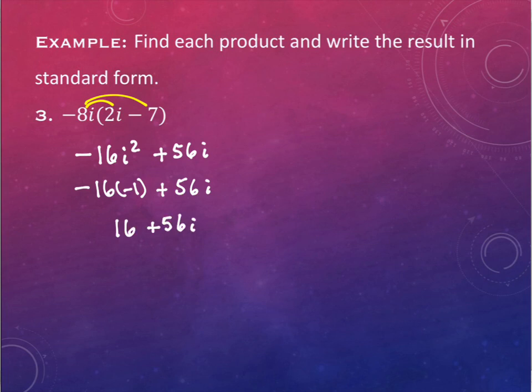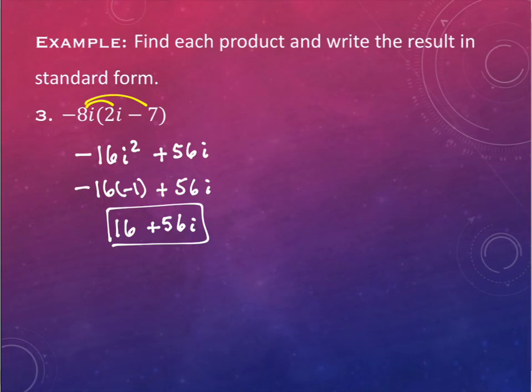The 56i stays the same. And we make sure that at the end it's written in a plus bi form, which it is, and we would be done. I don't know what MyMathLab will do if you reverse the order — it might tell you you're wrong. So do be careful to get them in the right order: the a part at the beginning, the bi part at the end.